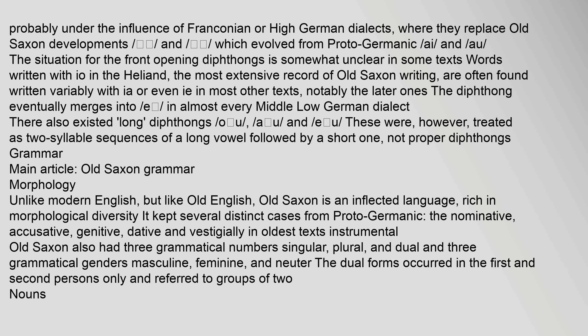Unlike modern English, but like Old English, Old Saxon is an inflected language rich in morphological diversity. It kept several distinct cases from Proto-Germanic: the nominative, accusative, genitive, dative, and vestigially in oldest texts the instrumental. Old Saxon also had three grammatical numbers — singular, plural, and dual — and three grammatical genders: masculine, feminine, and neuter. The dual forms occurred in the first and second persons only and referred to groups of two.